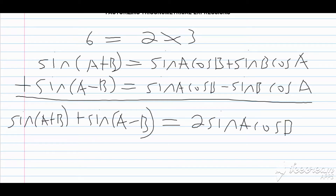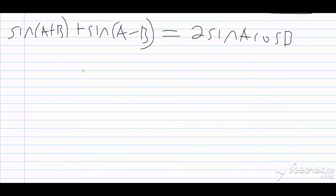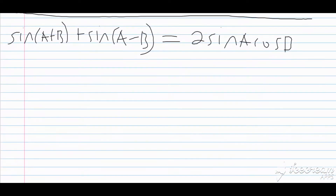You'll notice that the sine B cos A terms cancel out. Now if you look carefully at this expression, you'll notice that some factorization has taken place, because on the left-hand side I have sine of A plus B plus sine of A minus B, and I end up with 2 sine A cos B — and that is exactly what factorization is: expressing an expression as a product of factors.